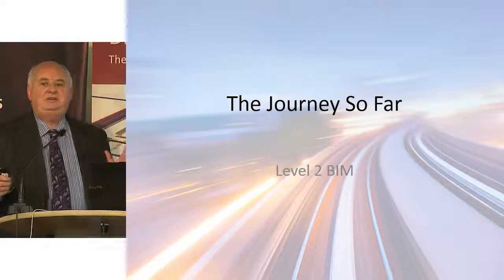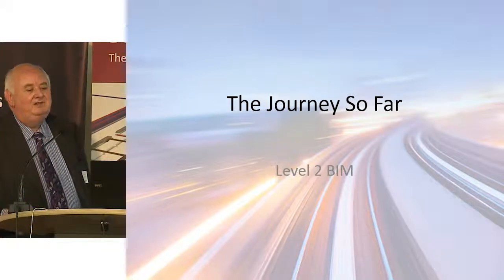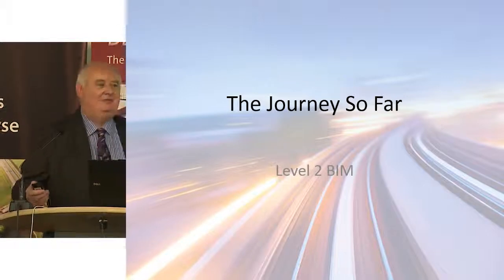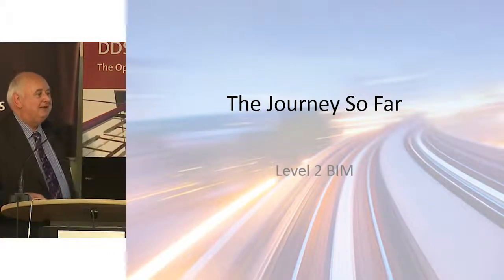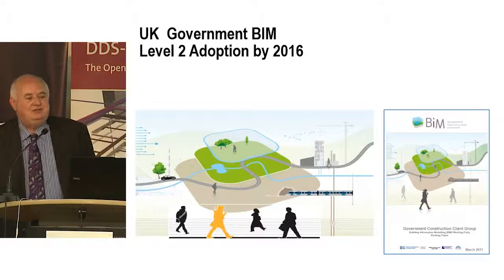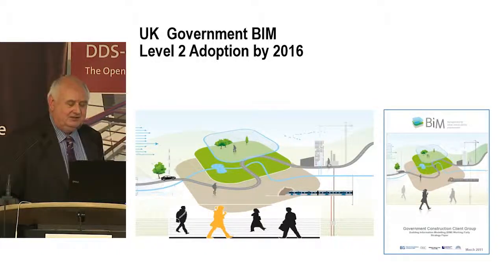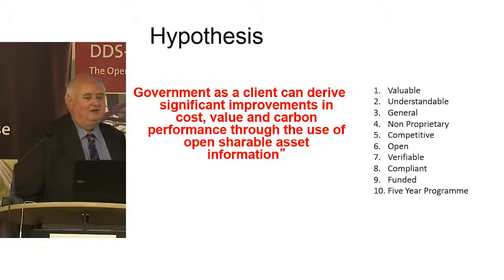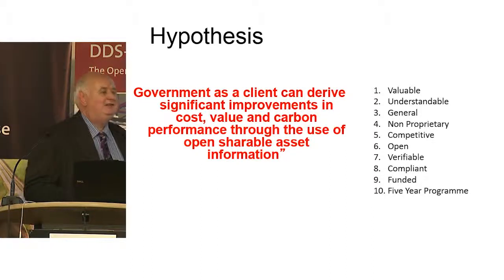Just a little summary of the journey so far from the UK perspective, and what we call Level 2 BIM. It's file-based, federated, and gathering information together in a pragmatic way that we can do today. The government started this strategy back in 2011, saying we're going to adopt Level 2 BIM by 2016. Our hypothesis was that the government as a client can derive significant improvements in cost, value, and carbon performance through the use of open, shareable asset information.